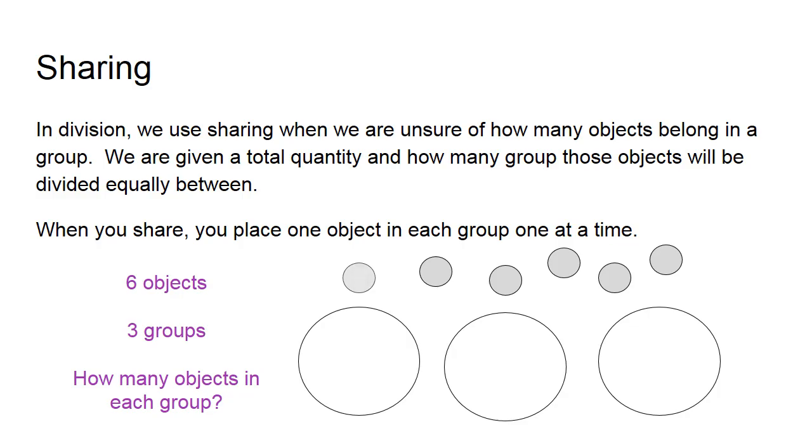I'm going to put one counter in each group one at a time. So I put one in each, so each group is equal with one counter, and I still have 3 left so I can do that process all over again.